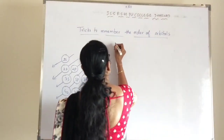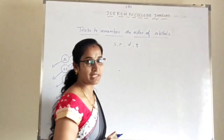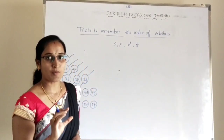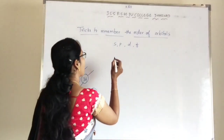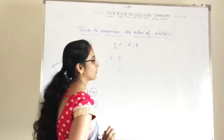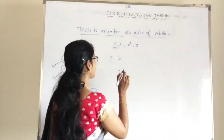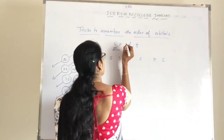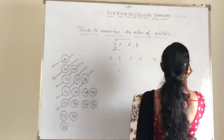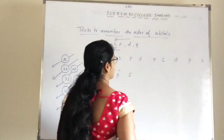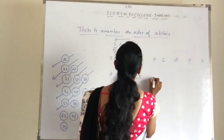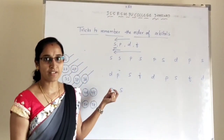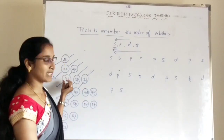The S, P, D, and F atomic orbitals are written from left to right, and whatever atomic orbitals we write should be written in two times. So the first term is S, S. Next term: P, S, D. Then P, S, D, P, S. And the last row: F, D, P, S, F, D, P, S. This is the way of writing the atomic orbitals in the increasing order of energy without using the energy level diagram.